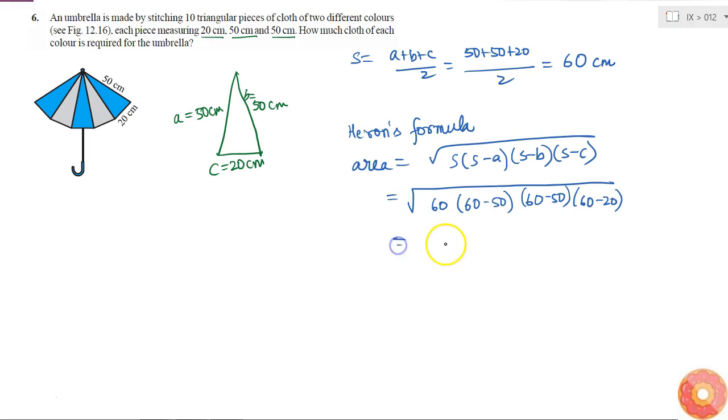So this is equal to square root over 60 into 10 into 10 into 40. So here I have 60 I can write it as 6 into 10 and 40 I can write it as 4 into 10.